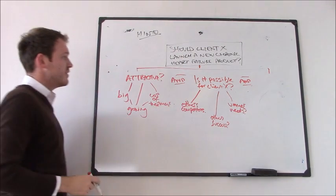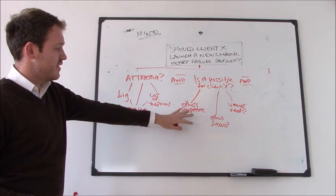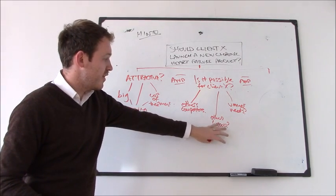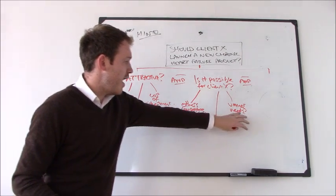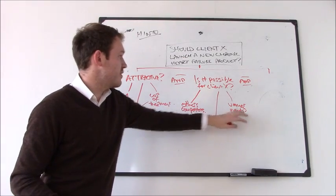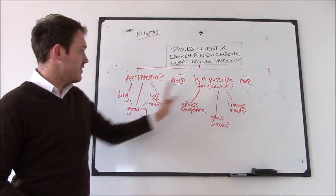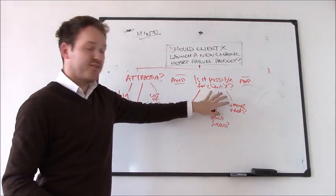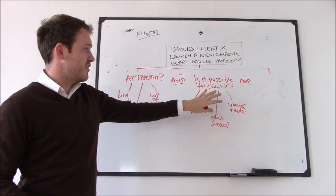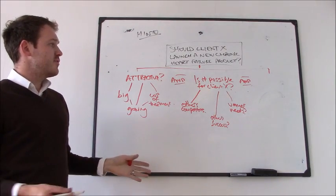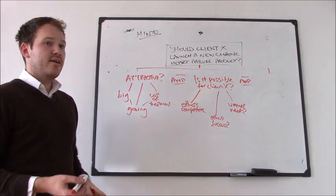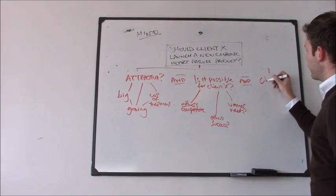So presumably, because it is an attractive market, we have other competitors that are playing in that space. Depending on whether they've been successful or not, and whether they've left any space for anybody else, then we kind of have our next layer. So we know it's attractive and we know that it's possible for ClientX to actually go into that space. Finally, the last thing that we need to look at in this example is what ClientX would then need to do to actually take a share of the market. So what do they need to do to be able to deliver?